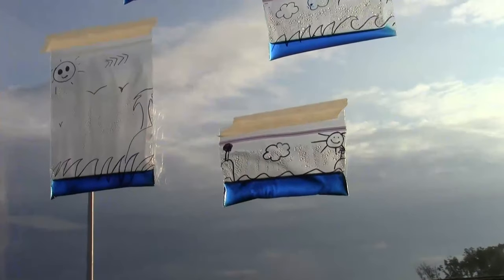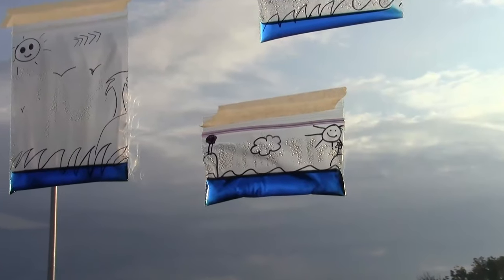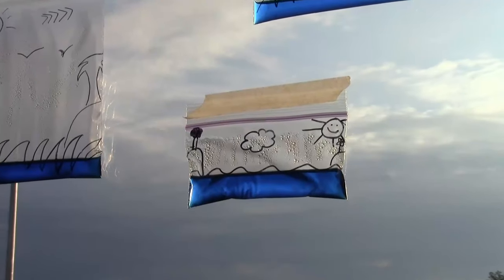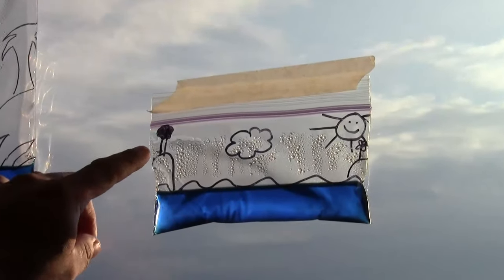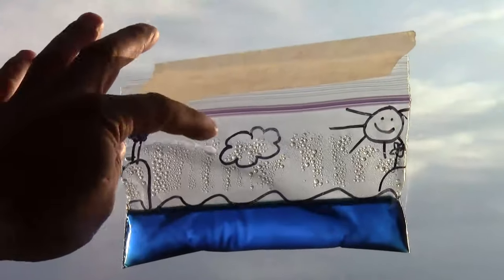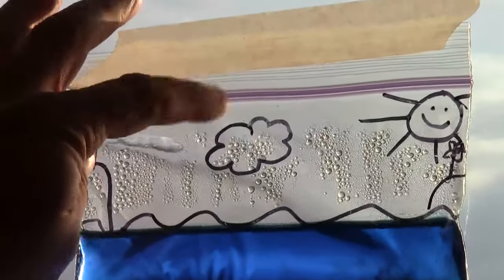Now we're going to zoom in on one of the bags here with the smiley face sun, and we're going to see if we can make it rain in the bag. We're just going to tap gently on the bags to see if a few of those drops that are on the side will get together and fall down.